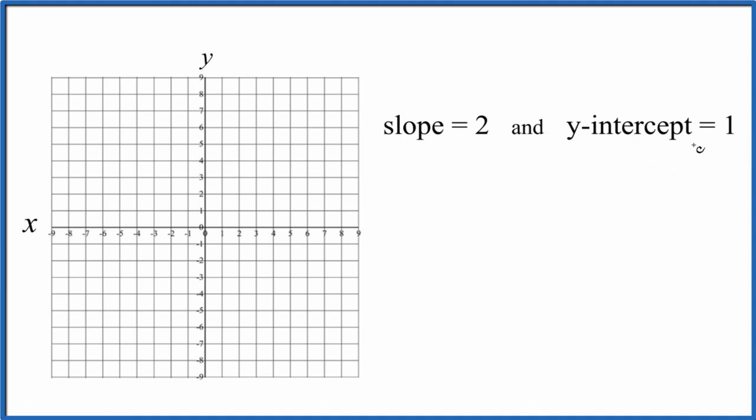So to start off let's just look at the y-intercept here. We said the y-intercept is 1 and what that means is if we go to the y-axis here and we find 1, that's where the line is going to cross the y-axis. So we have our first point here.